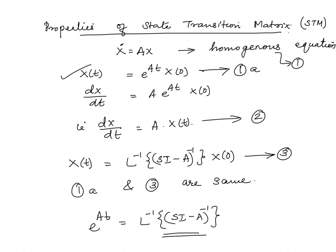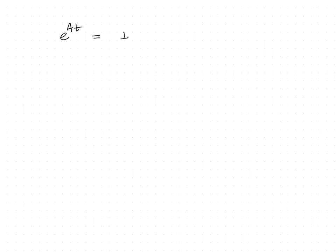Now comparing the previous solution with our assumption, on comparing equation 1a with equation 3, we can write e^(At) as the Laplace inverse of (sI - A)^(-1). This shows that the state transition matrix is nothing but e^(At).